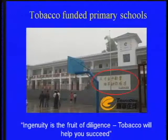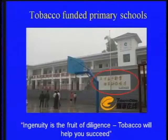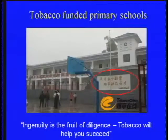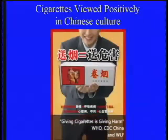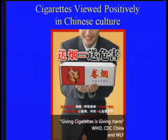Furthermore, cigarettes are deeply embedded in Chinese culture, perhaps even more so than in the U.S. in the 1940s and 50s. This primary school is funded by tobacco sales, with a sign translated as: 'Ingenuity is the fruit of diligence. Tobacco will help you succeed.' Cigarettes are viewed very positively in Chinese culture, and what it takes to change these social norms and attitudes about smoking is enormous.